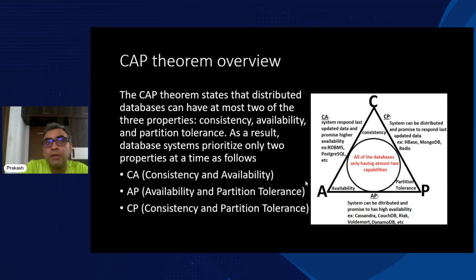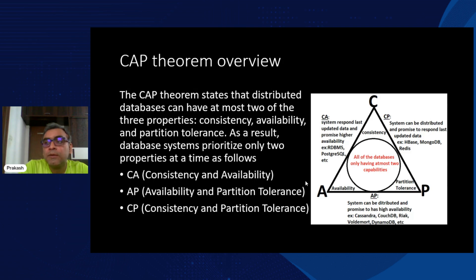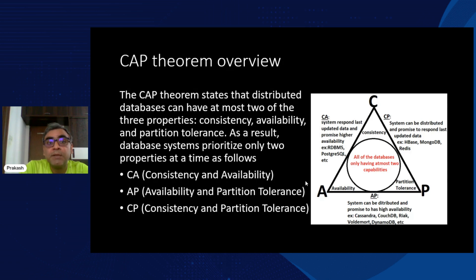For availability, take the example of Twitter or X. If you post something, it's okay if it doesn't appear immediately — if it shows in your feed a few minutes later, that's manageable. You don't have a financial loss if the feed is slightly delayed. But in financial systems, if data is not consistent, you could end up with financial loss. So based on your use case and what kind of application you're building, you must prioritize whether consistency or availability matters more.